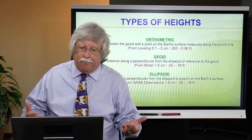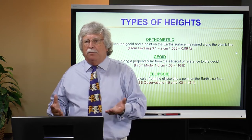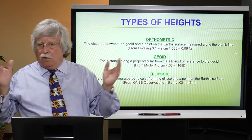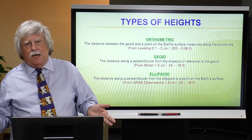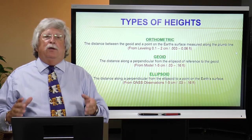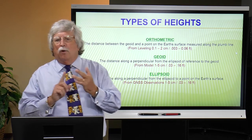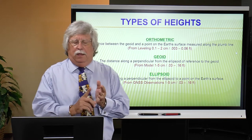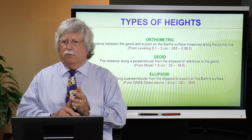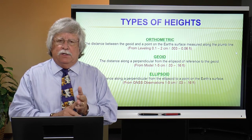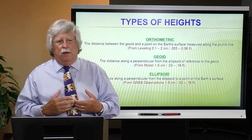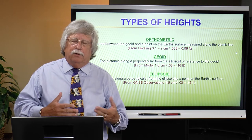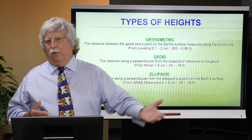How good is an ellipsoid height? It will depend on a number of things: the conditions under which you make your GNSS measurements, having a good open environment with lots of satellites, collecting high-quality data, and processing with at least the rapid orbits provided by the IGS and NGS. Most people start with broadcast orbits — they're okay but not the best. You get better heights with rapid orbits, and the best heights if you wait a couple of weeks for precise orbits.